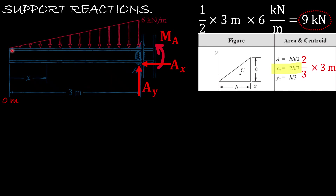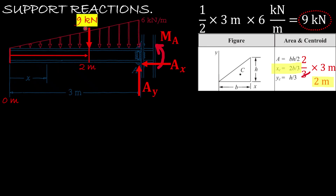Since the distributed load runs from zero all the way to three meters, we use two-thirds times the base, which is three meters. The three cancels, giving us two meters. So we place our concentrated load of nine kilonewtons — the area of the triangle — at two meters from zero.